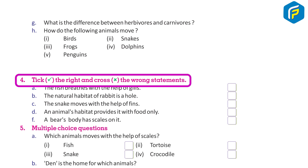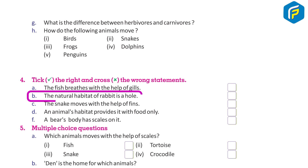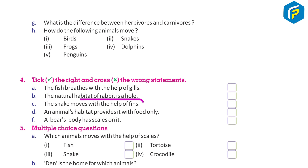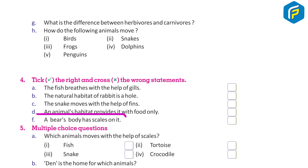Tick the right and cross the wrong statements: A. The fish breathes with the help of gills. B. The natural habitat of a rabbit is a hole. C. The snake moves with the help of fins. D. An animal's habitat provides it with food only. E. A bear's body has scales on it.